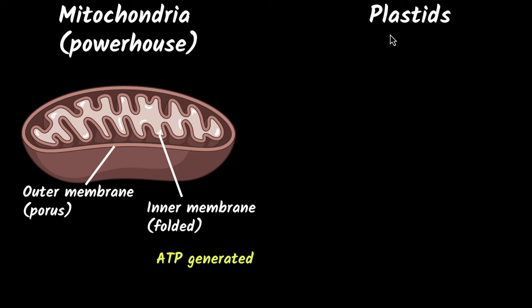But now let's go to plastids. Plastids are found only in plants and algae. But what exactly are they? Well, they are of different types and they have different functions.